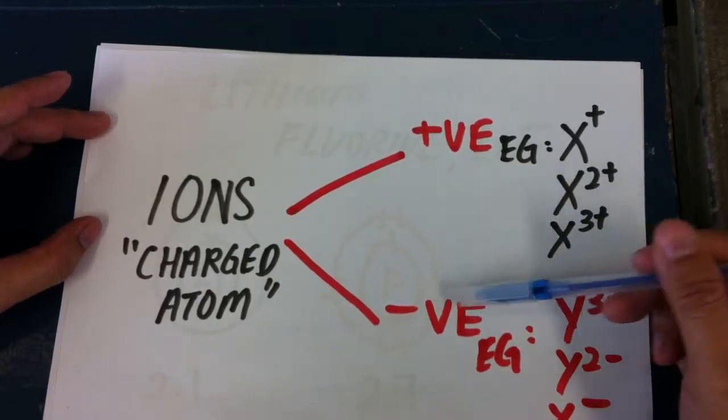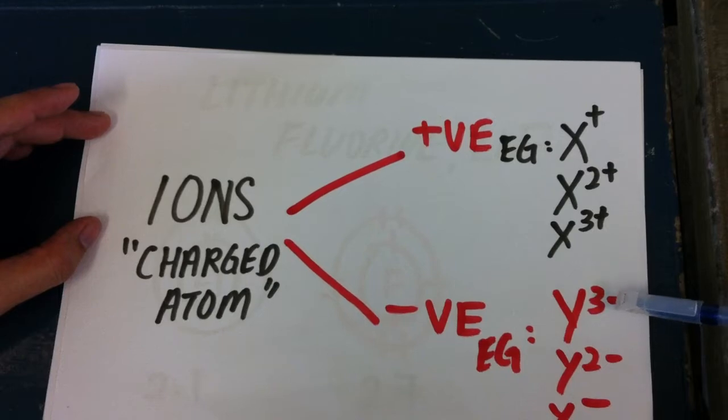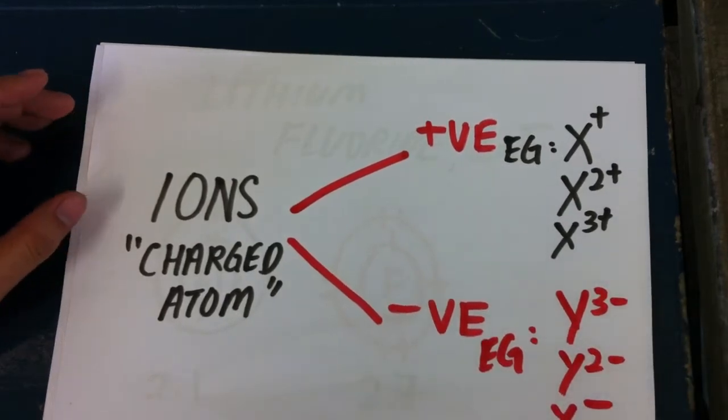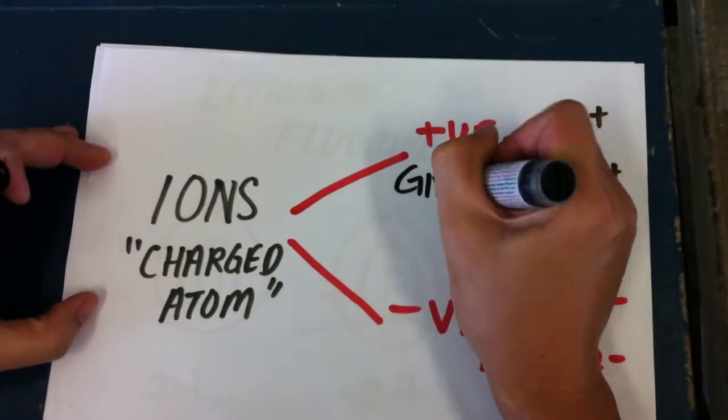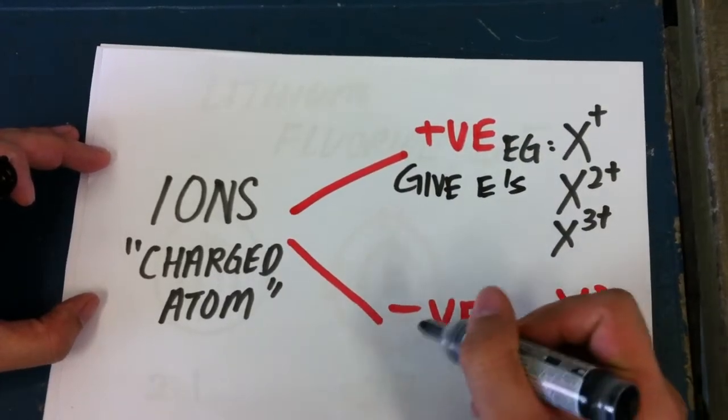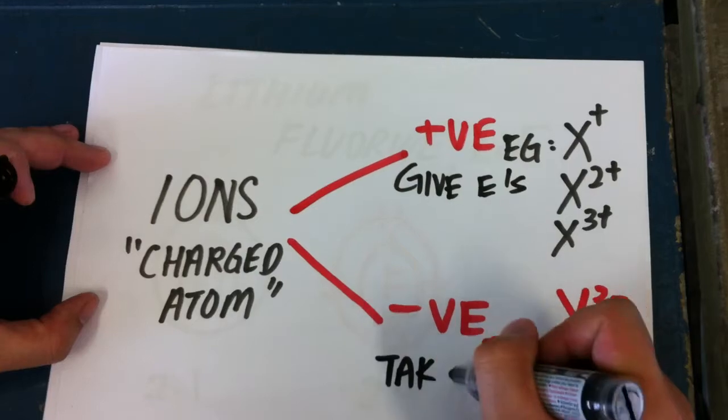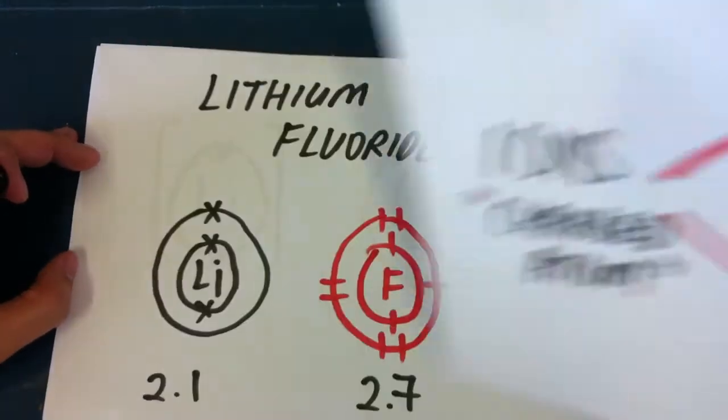Negative ions are atoms that take in electrons. If they take in three electrons, there'll be more negative than positive, so therefore they will be 3-. Same as you go down, 2- if you take in one electron, 1-. So remember: positive ions give electrons, negative ions take in electrons.